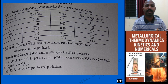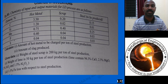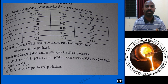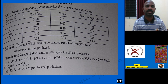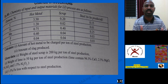In steel, the five main elements present are carbon, silicon, manganese, phosphorus, and sulfur. The rest is iron. The hot metal is liquid state pig iron in the case of the LD steel making process.